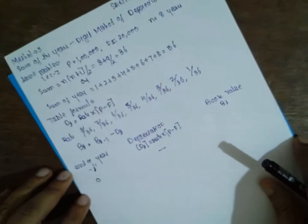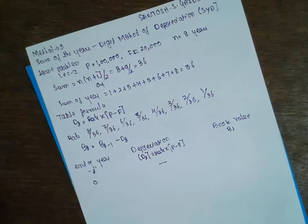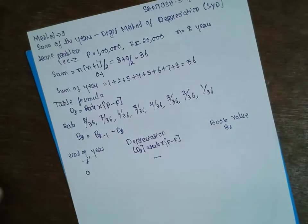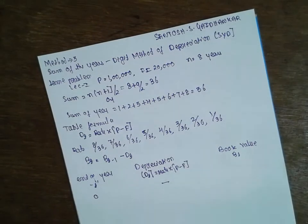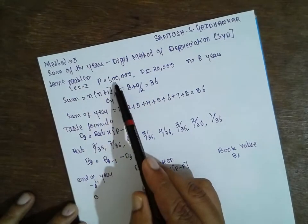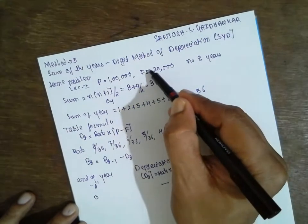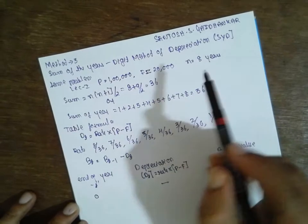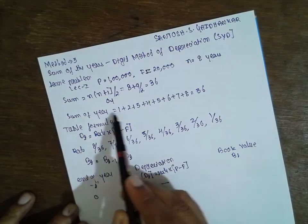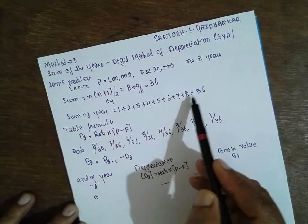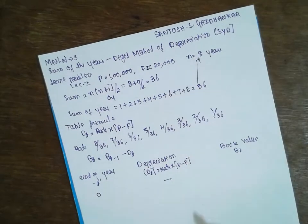Now I am explaining the problem using the SYD method. This is the same problem as in lecture one: P = 1 lakh, F = 20,000, n = 8 years (also called scrap value). The sum = n(n+1)/2 = 8×9/2 = 36, or equivalently 1+2+3+4+5+6+7+8 = 36.